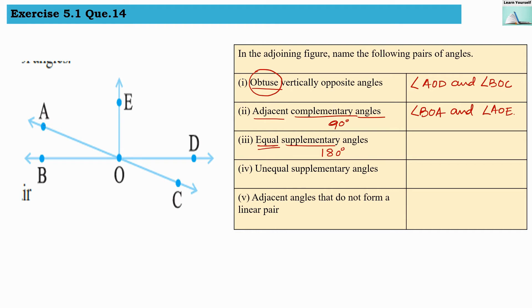That means if they both are 90 degrees, then only we will get 90 degrees plus 90 degrees equals 180 degrees. So we have to find out a pair of two supplementary angles which are of measure 90 degrees.